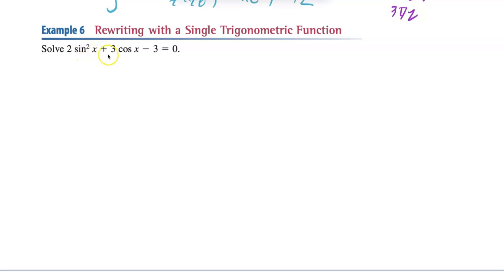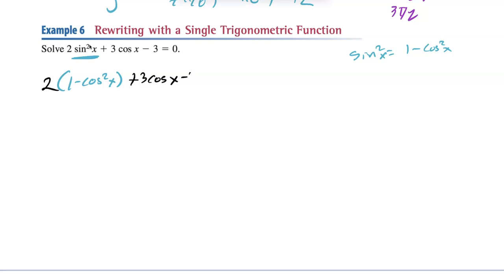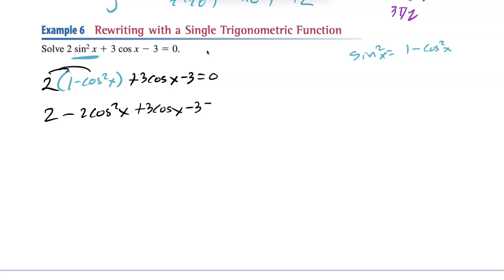This problem has 2sin²x + 3cos x − 3 = 0 — the trig functions don't match, so we need to write everything with the same function. We can't change cosine by itself, but we can change sin²x using the identity: sin²x = 1 − cos²x. Substituting and distributing: 2(1 − cos²x) + 3cos x − 3 = 0 gives 2 − 2cos²x + 3cos x − 3 = 0.